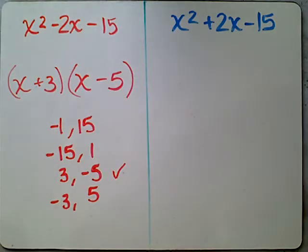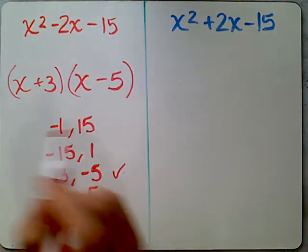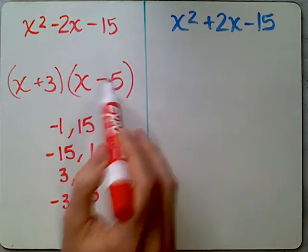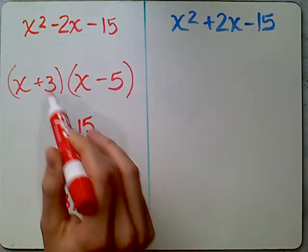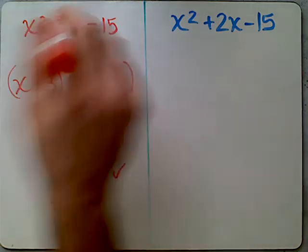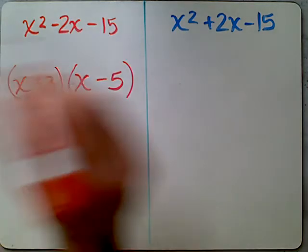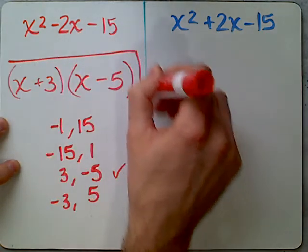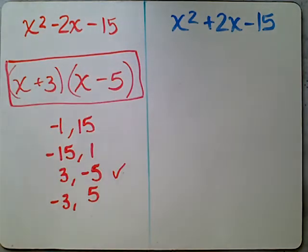Now let's check this work by distributing between the two. We would have x squared minus 5x plus 3x minus 15. And then when combining those two middle terms, the negative 5x and the 3x, we'll get back to where we started here at negative 2x. So that is the factored version of the first trinomial.